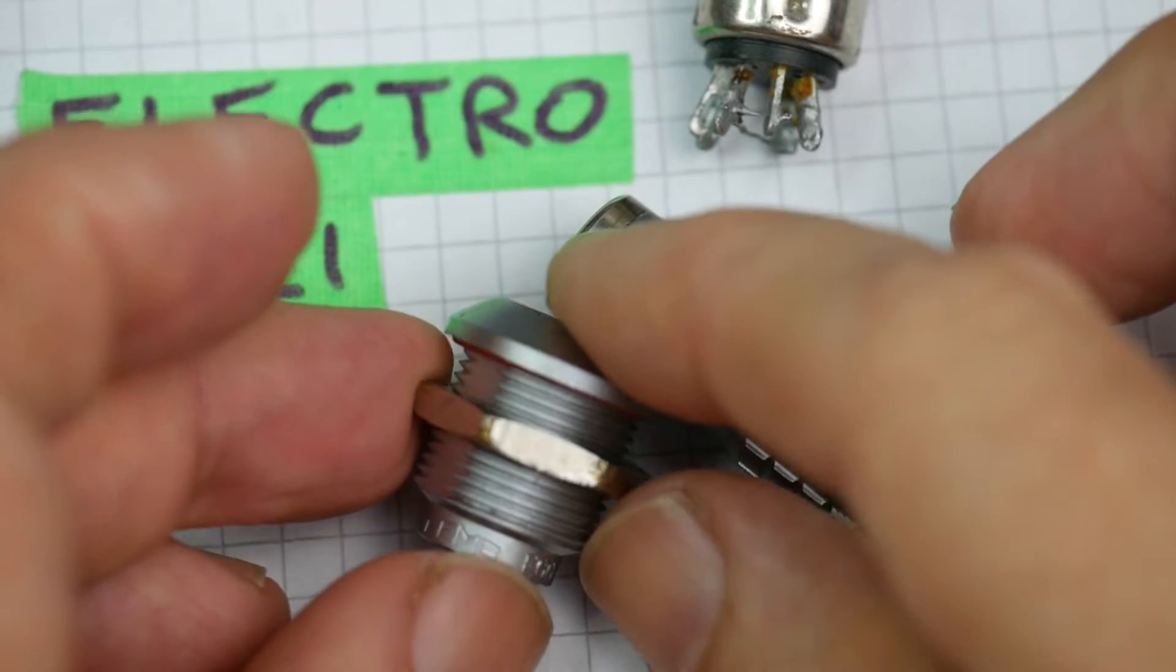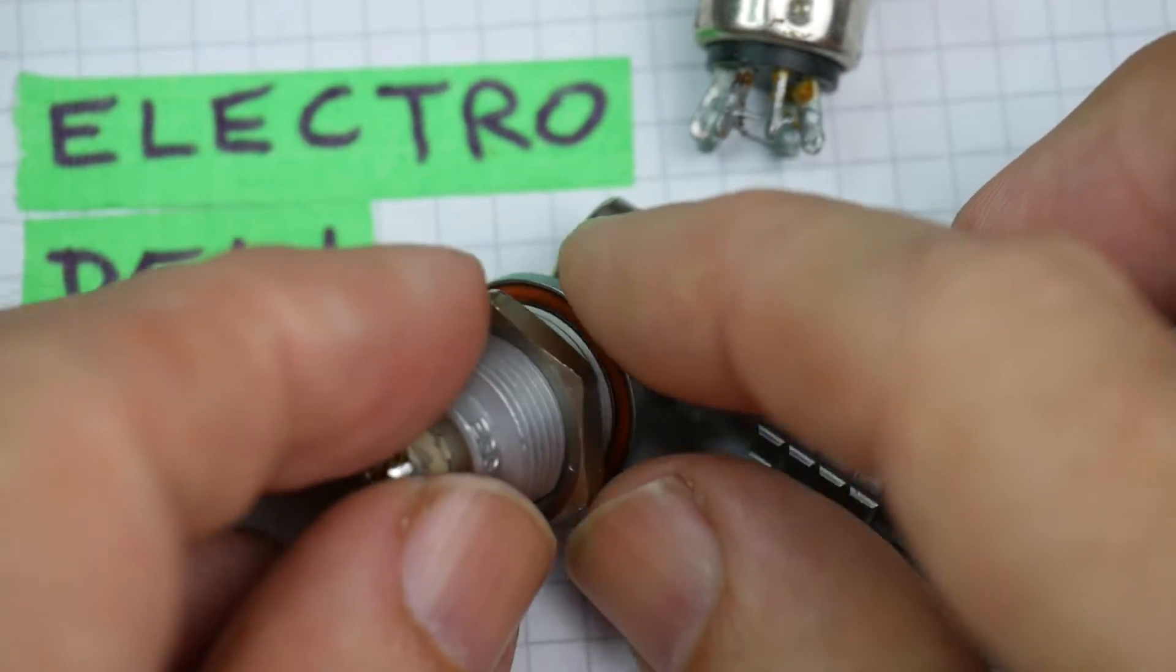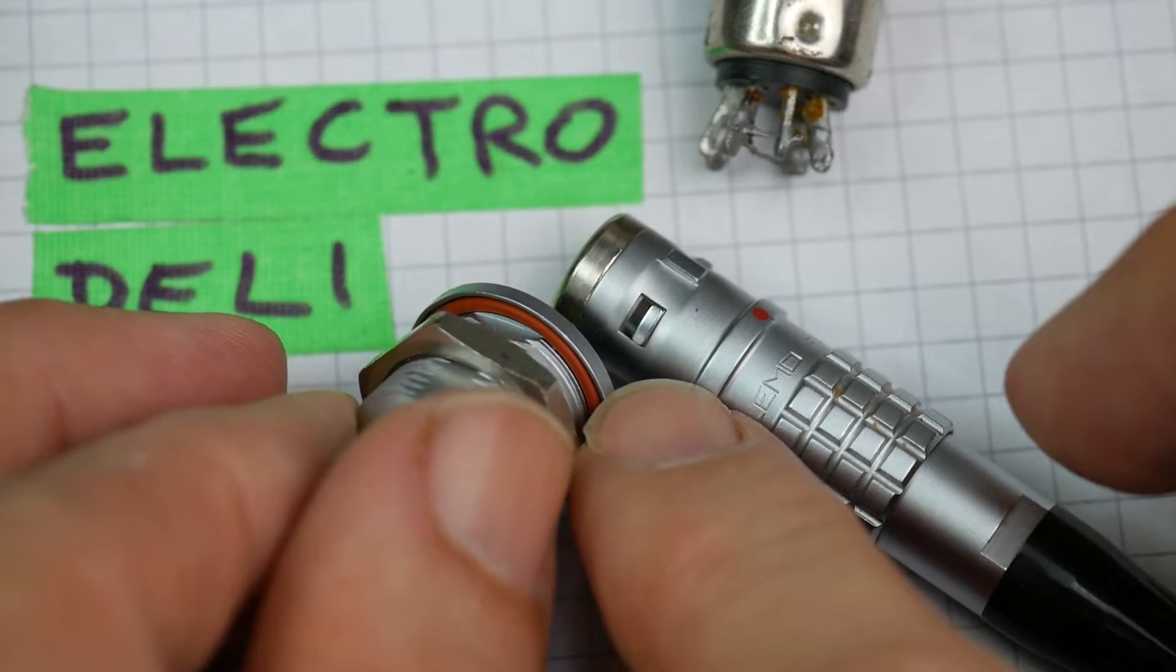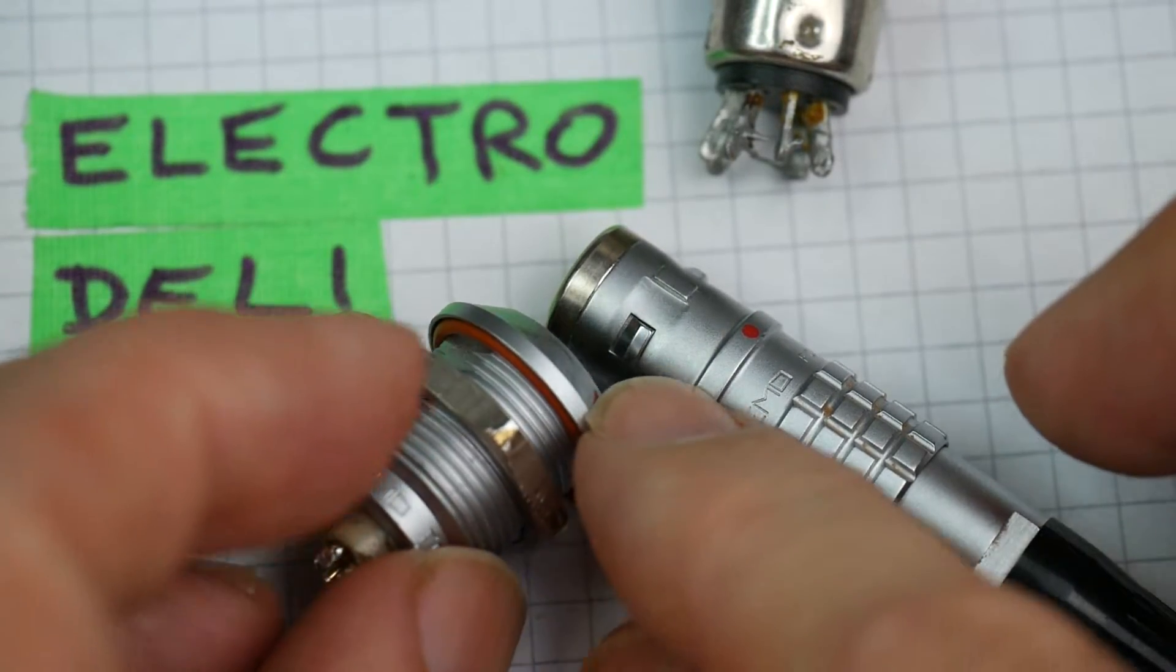This thing is machined, it's got a nut on the back. There's an orange thing, an O-ring, a sealing ring, to make it a little bit watertight.